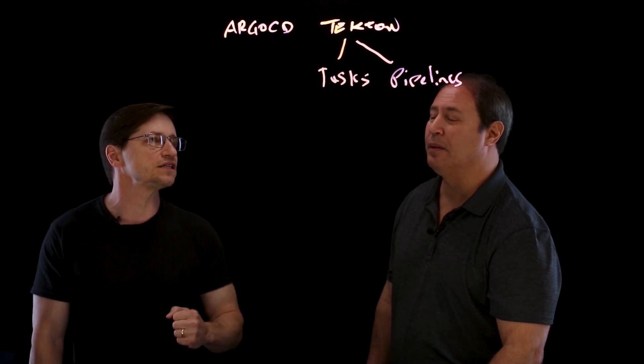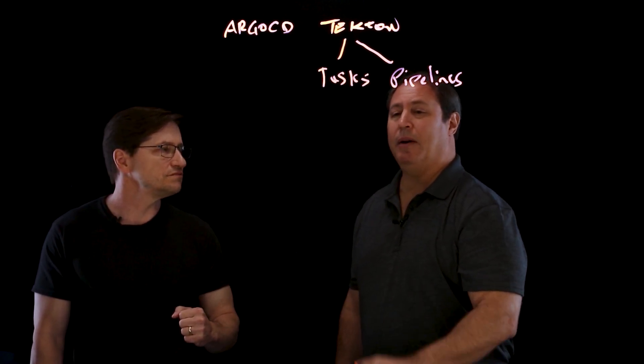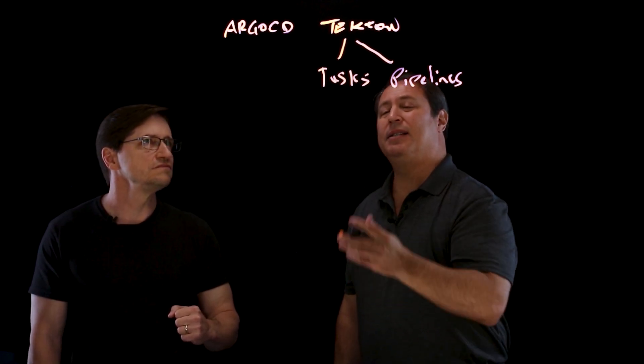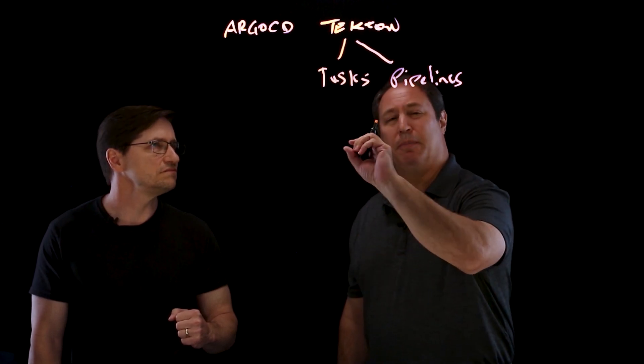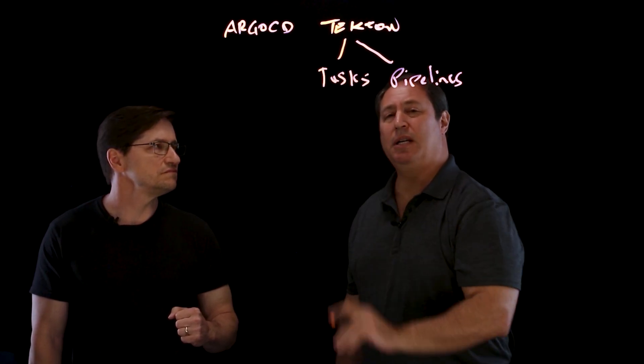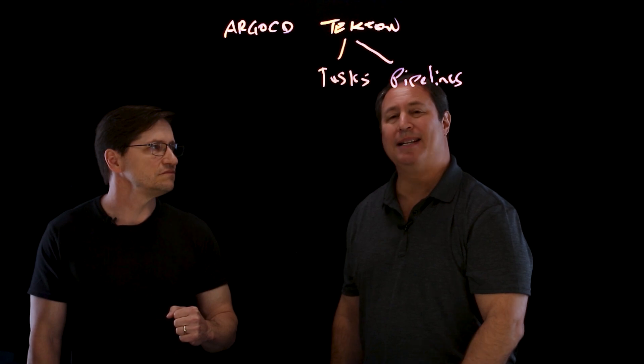And so how does Argo come in? How does it help with Tekton? Well, the nice thing about Argo CD is it's a pull-based model. So with Tekton, it's a push-based model. But Argo CD is a pull-based model and it's declarative.